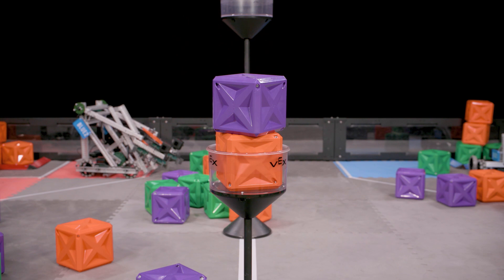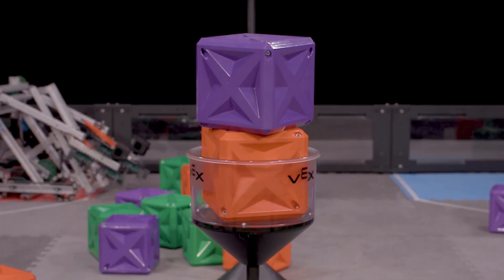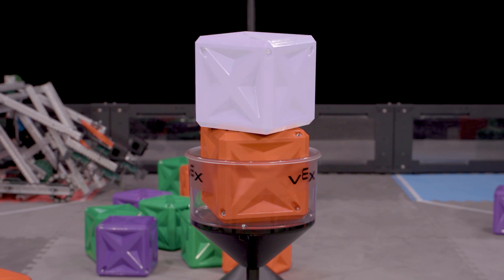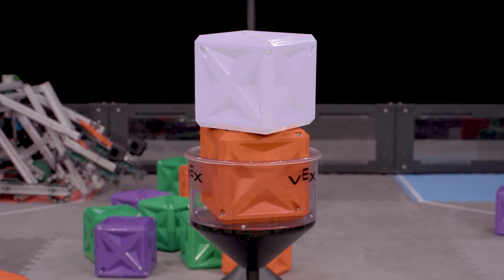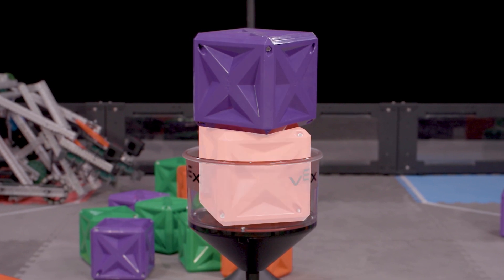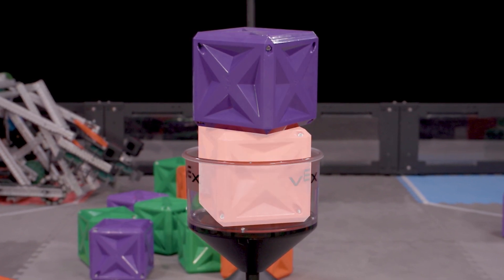There are a few caveats to a cube counting as placed. For example, only one cube can be placed in any given tower. So if two cubes are stacked on top of one another inside of a tower, then the top cube would clearly not be below the placing line and therefore would not count as placed. But the one which is below the placing line would still count.